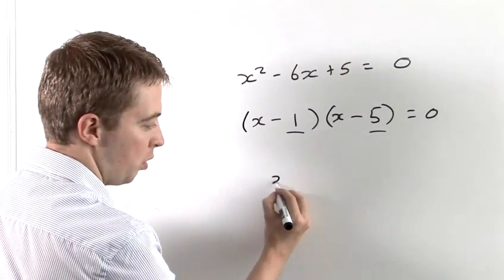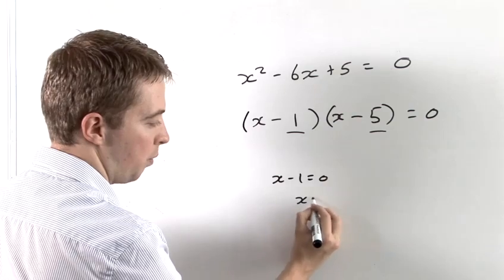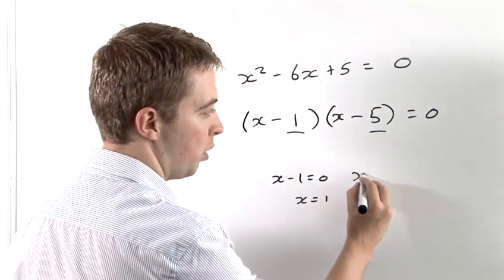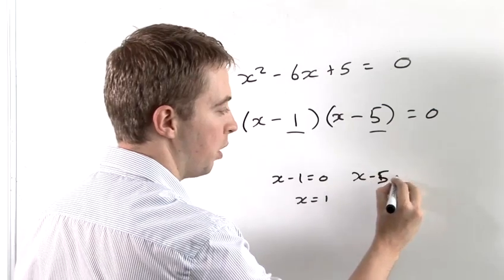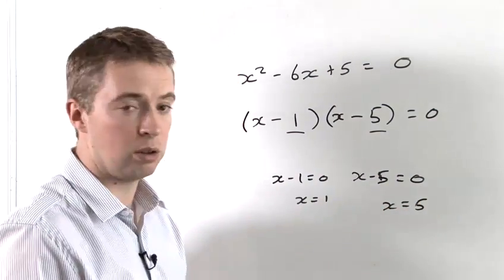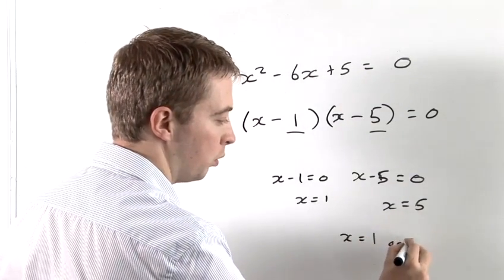If this bracket is equal to 0, we know that x minus 1 equals 0, and therefore x equals 1. If this bracket here is equal to 0, we know that x minus 5 is equal to 0, and therefore x equals 5. So the result of this equation would be to say x is equal to 1 or 5.